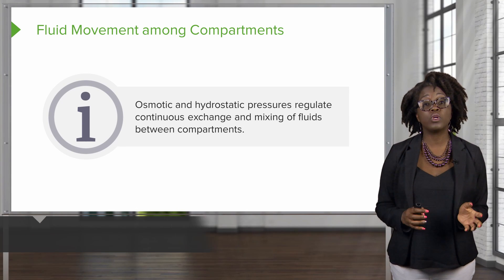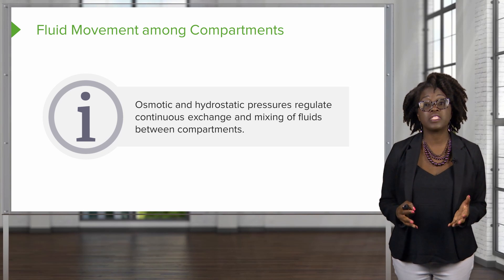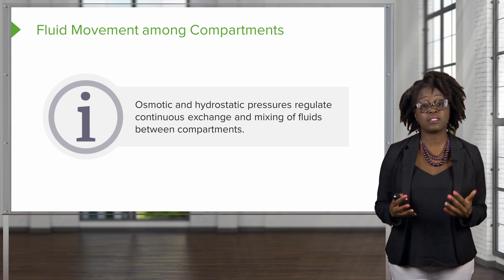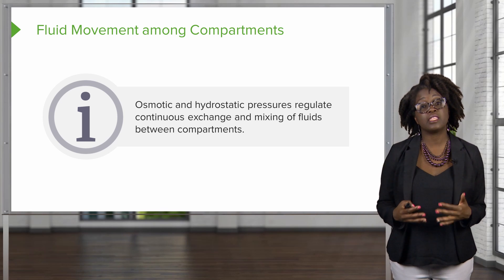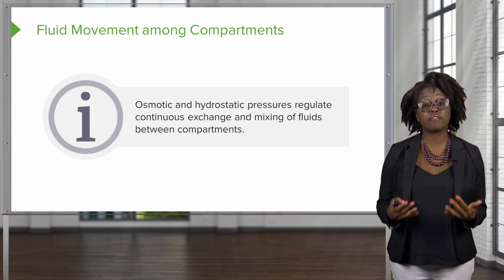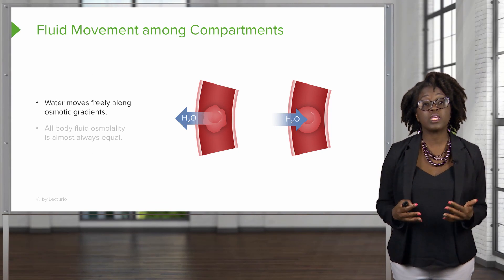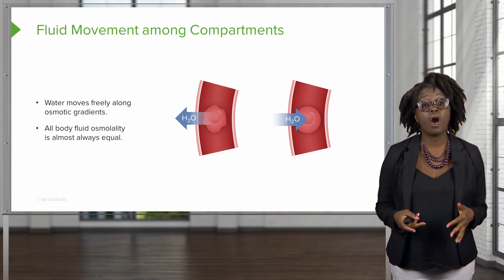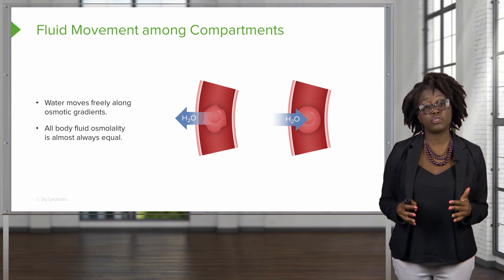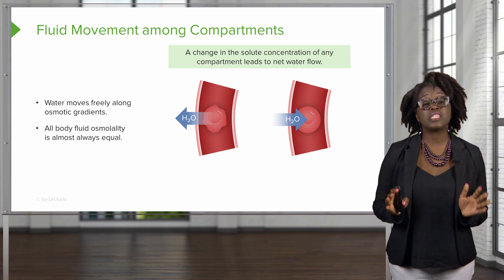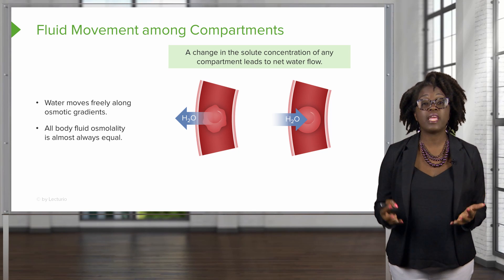We look at how fluids move between the intracellular and extracellular compartments by examining the different forces that act on these fluids. Osmotic and hydrostatic pressures regulate the continuous exchange and mixing of fluids between compartments. Water moves freely along its osmotic gradient, and all of our body's fluid osmolality is almost equal at about 300 milliosmoles. Any change in solute concentration of any compartment will lead to a net water flow.